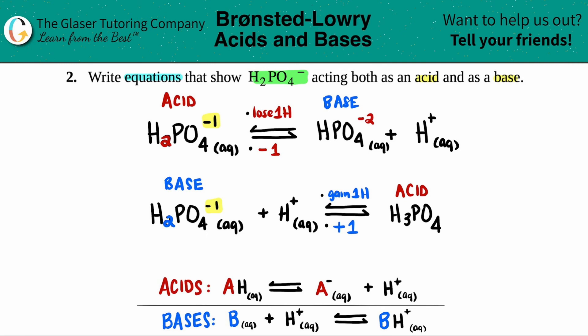And since this is an acid, I will write my aqueous. And here are my two equations. So this is my equation if H2PO4 minus one was acting as an acid. And here was my equation if H2PO4 was acting as a base. This was it right here.